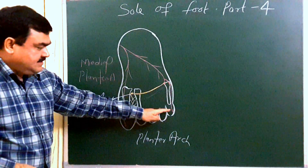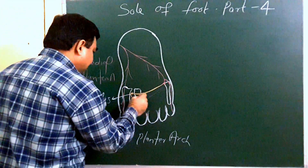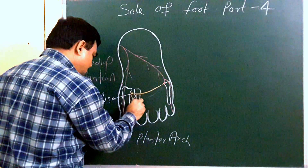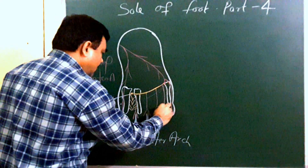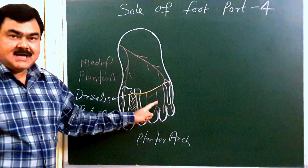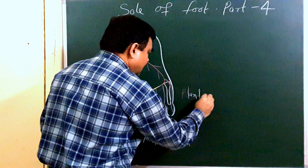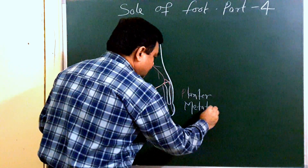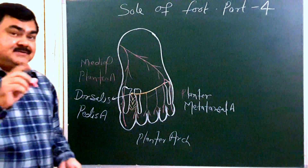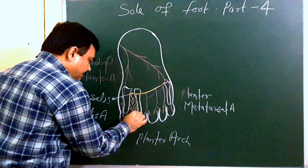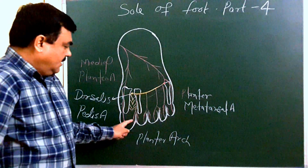The superficial branch gives supply to the lateral sole, and the deep branch — the plantar arch — gives branches: the first, second, third, and fourth plantar metatarsal arteries. Each plantar metatarsal artery again divides into plantar digital branches, which give supply to the adjacent sides of two adjacent toes.